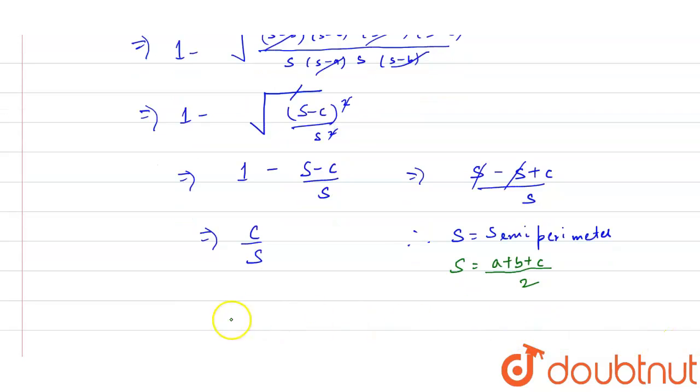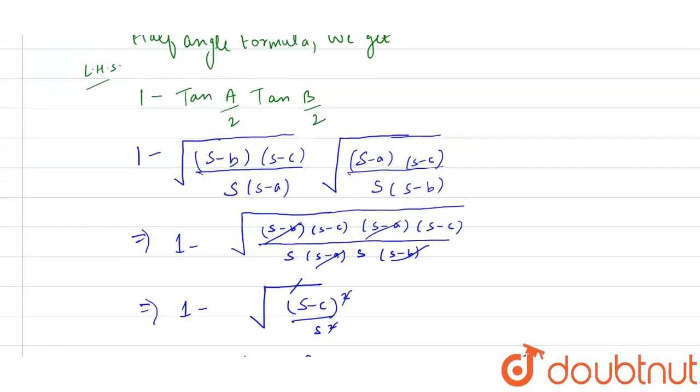Now if we put the value of s equal to a plus b plus c by 2, we get it equals 2c divided by a plus b plus c, which is equivalent to our RHS. This is our final answer. We have proved that it equals 2c divided by a plus b plus c, which we had to prove.